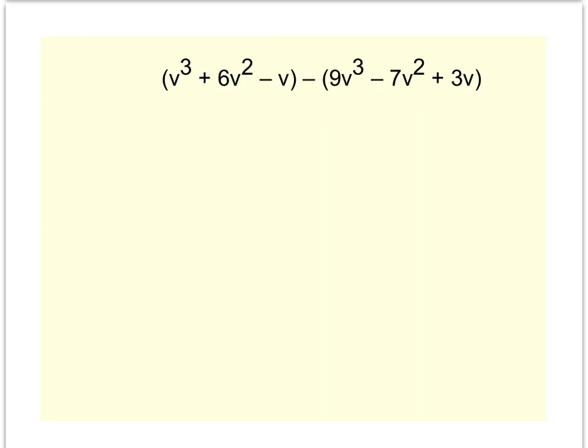When I look at this next example, I recognize it's a subtraction problem because there's a subtraction sign between my two polynomials. So what I'm going to have to do first is distribute that negative one to everything in the second polynomial. I'll start by rewriting my first one as it was given to me.